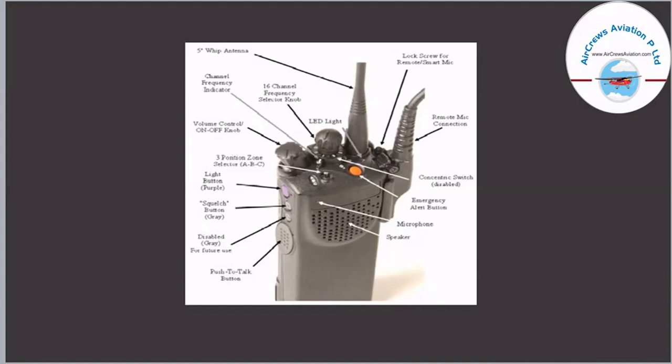The orange button is for the emergency alert. Near the LED lock there is a concentric switch, followed by a remote mic connection, and finally a lock screw for the remote or smart mic. That is the brief labeling of the radio telephone.